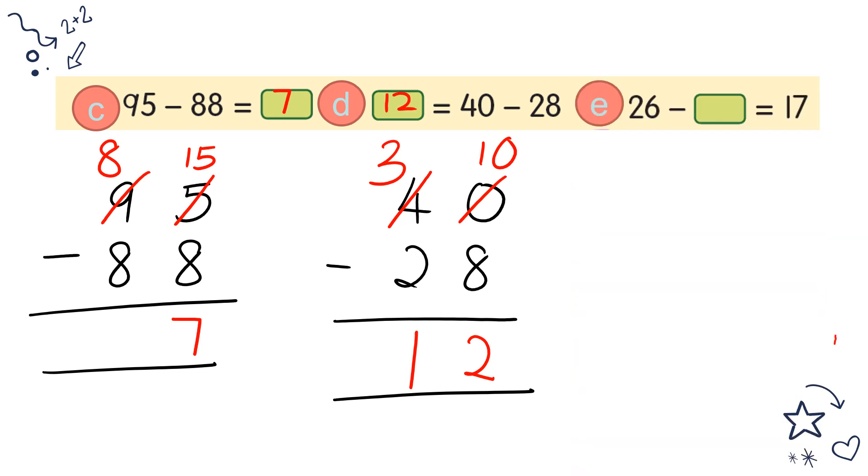For E: 26. Just now I said to find the middle number in number sentences, you have to continue using minus. So 26 minus 17 equals. 6 cannot minus with 7, so we borrow from 2 and it becomes 16. 16 minus 7 equals 9. 1 minus 1 equals 0, so you don't need to write 0. So you just have to write 9.